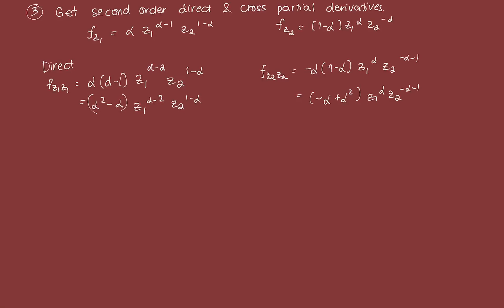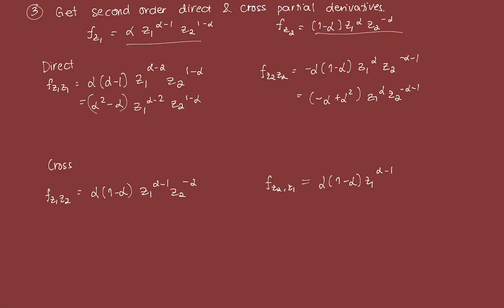For the cross partial derivatives: FZ1Z2 — deriving the first-order partial with respect to Z2 — gives alpha times 1 minus alpha, times Z1 raised to alpha minus 1, times Z2 raised to negative alpha. FZ2Z1 — deriving with respect to Z1 — gives the same result: alpha times 1 minus alpha, times Z1 raised to alpha minus 1, times Z2 raised to negative alpha. Since FZ1Z2 equals FZ2Z1, Young's theorem holds.